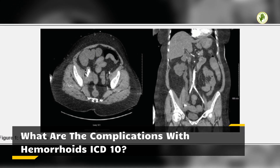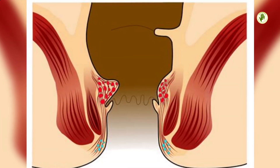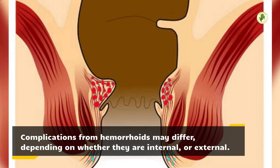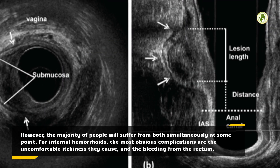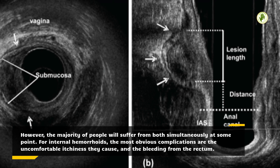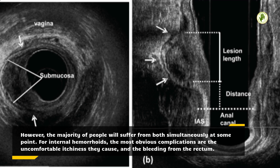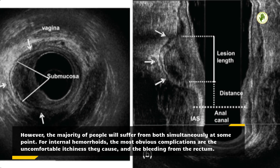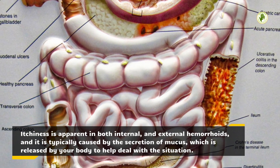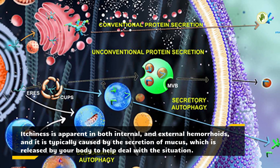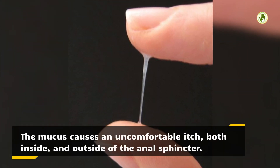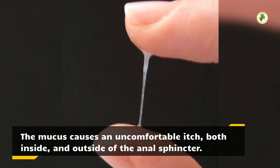Complications from hemorrhoids may differ depending on whether they are internal or external. However, the majority of people will suffer from both simultaneously at some point. For internal hemorrhoids, the most obvious complications are the uncomfortable itchiness they cause and the bleeding from the rectum. Itchiness is apparent in both internal and external hemorrhoids, and it is typically caused by the secretion of mucus, which is released by your body to help deal with the situation. The mucus causes an uncomfortable itch both inside and outside of the anal sphincter.